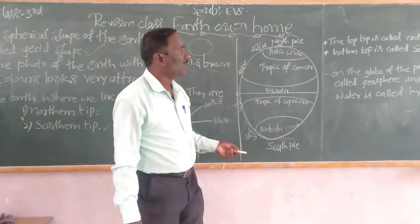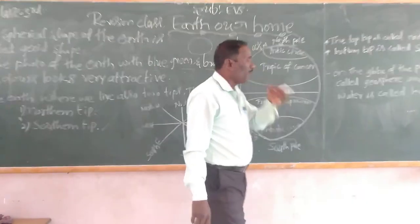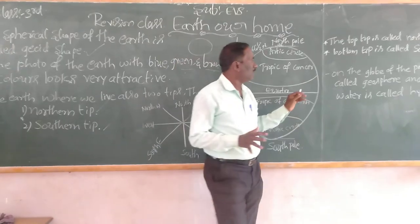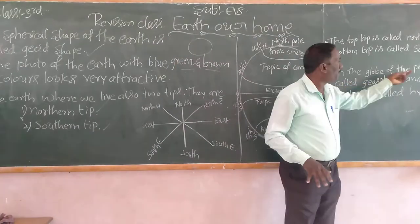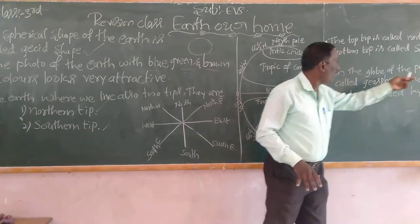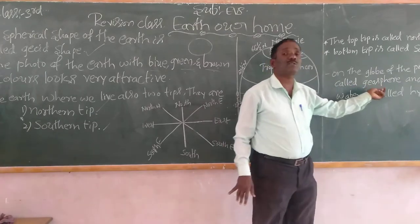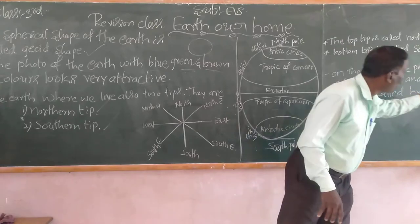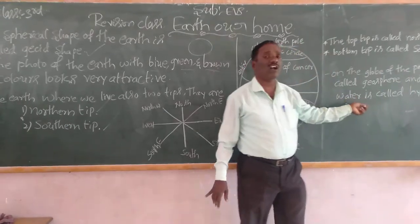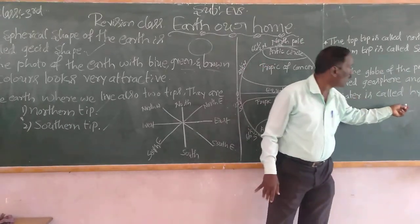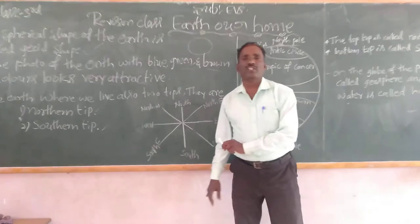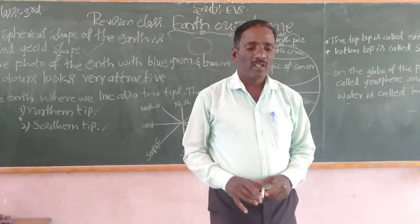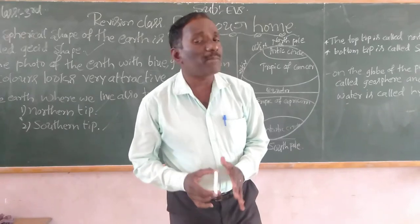Totally, on the globe, the picture of the globe — the portion of land on the globe is called Geosphere, and the portion of water is called Hydrosphere.